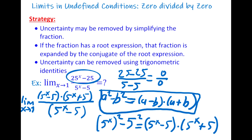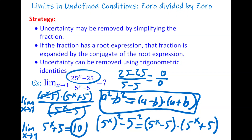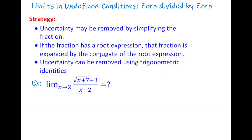The common factor (5^x - 5) cancels, leaving the limit of (5^x + 5) as x goes to 1. Substituting x = 1 gives 5¹ + 5 = 10. So the result is 10.